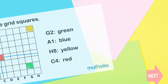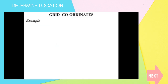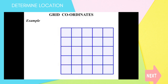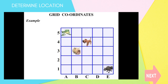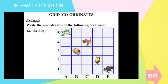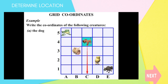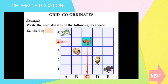Take a look at grid coordinates. We have a grid with the bottom axis labelled A, B, C, D, E, and the side axis labelled 1, 2, 3, 4, 5. We are asked to write the coordinates of creatures. The dog is in column C and row 4, so we write C4. The chick is in column D and row 2 — we write D2. The bull is in column E and row 1 — we write E1.